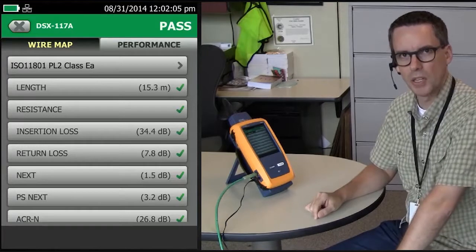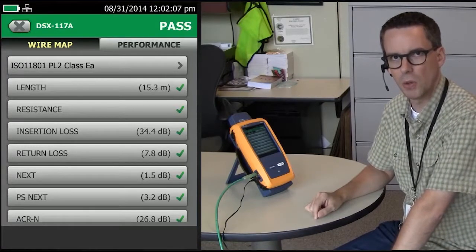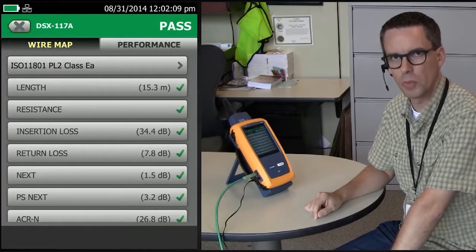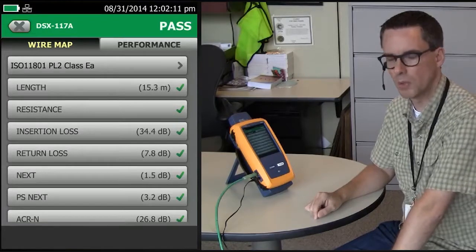There is a rather strange rule that applies to near-end crosstalk if you're testing to any of the ISO limits or European EN limits, called the 4 dB rule.